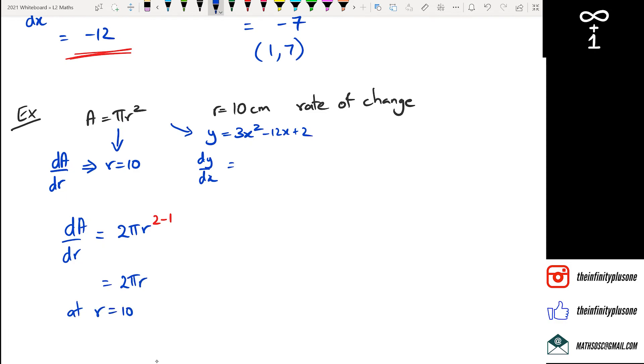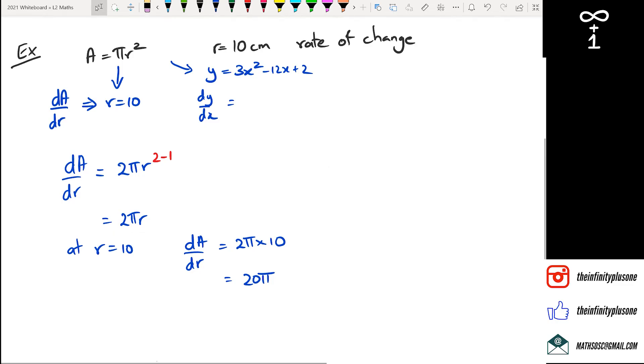So at radius equals 10, we can say that dA/dr is equal to 2 times π times 10, which equals 20π.